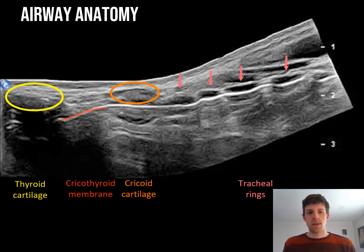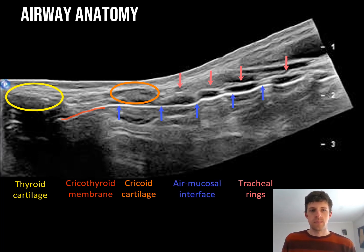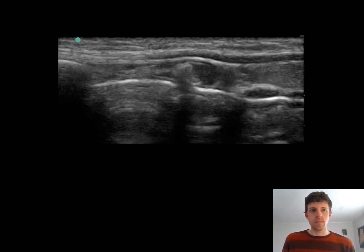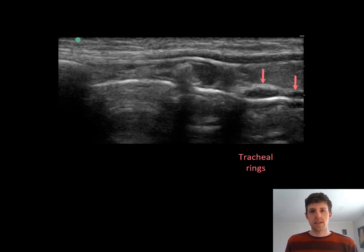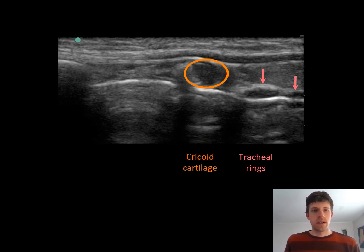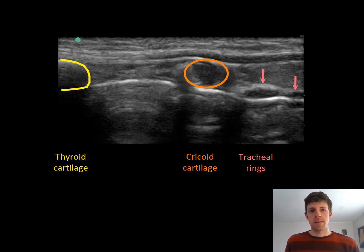The bright white appearance is generated by the air-mucosal interface within the trachea. Here's another annotated version of the ideal image you are after. You can see the tracheal rings at the right of your screen with the cricoid cartilage, the thyroid cartilage, and your target, the cricothyroid membrane, sitting right between the two.